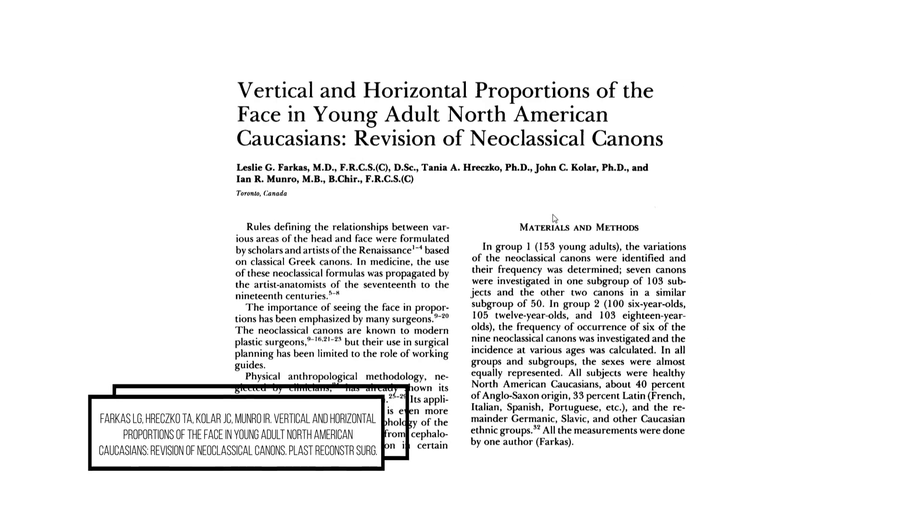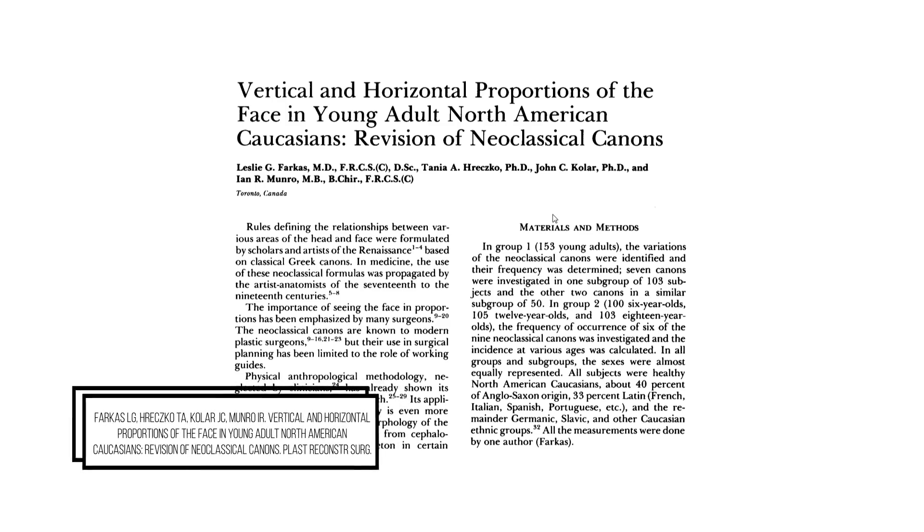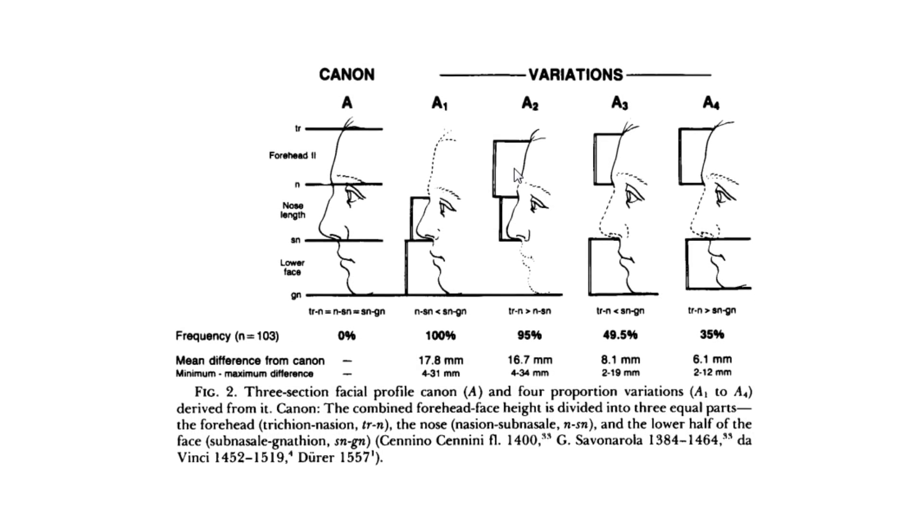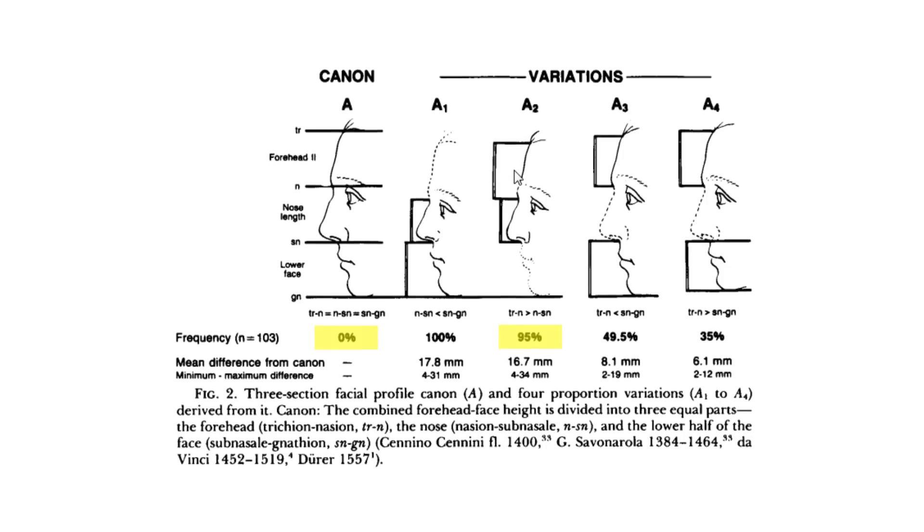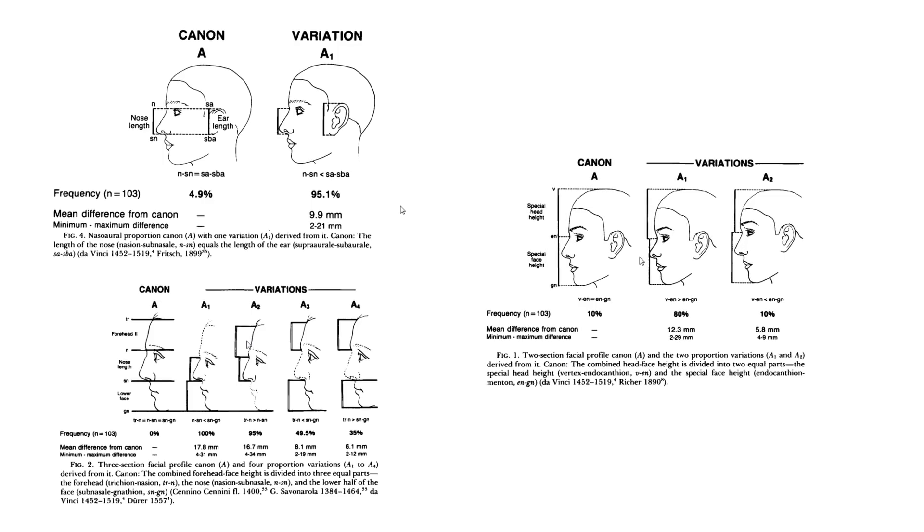Farkas 1985 with colleagues aimed to tackle 8 neoclassical canons that these Renaissance artists were particularly fond of to revise them for a greater range of acceptable variation. To the mainstream audience, it's understood that an attractive face has perfect facial thirds, but as we see here, 0% of the participants in this test paper had these proportions, instead being more bottom heavy with a larger lower third and forehead. We see this trend with the remaining 7 neoclassical guidelines where very few participants actually fit the canon guidelines.